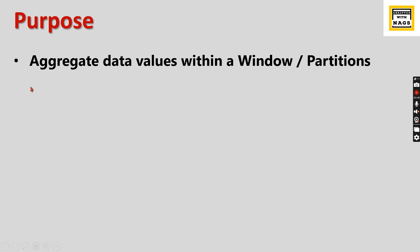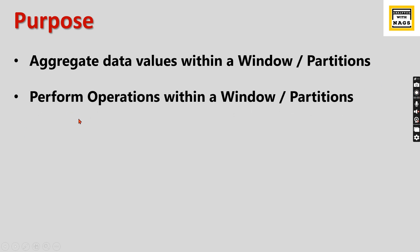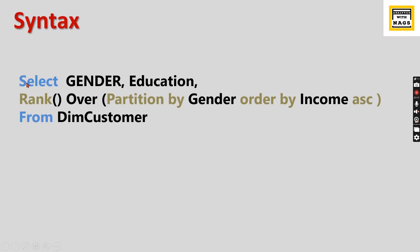So what is the purpose of a window function? Basically it can perform aggregation on data values within a window or a partition — that's the primary purpose. It can also perform other operations beyond aggregation like SUM, AVERAGE, MIN, MAX, as well as RANK, ROW_NUMBER, and other functions within partitions. There are many use cases; I'll cover two in this video.